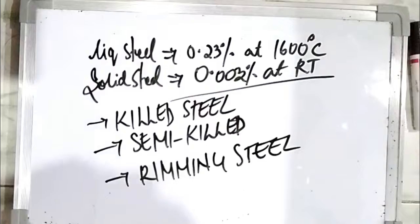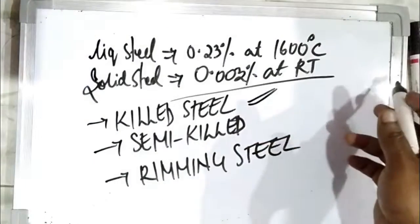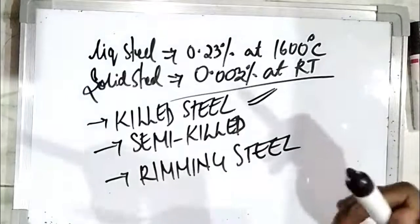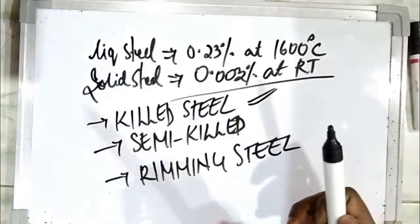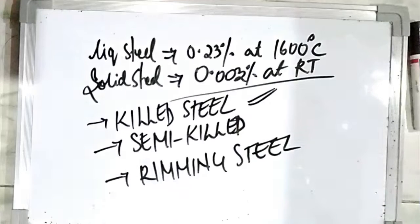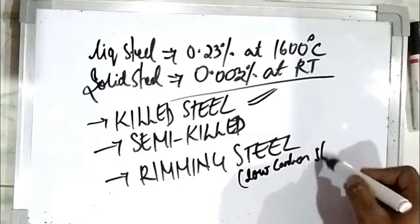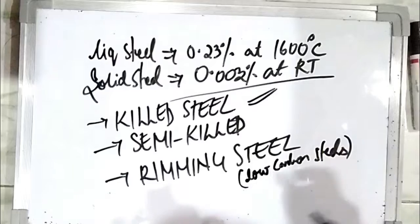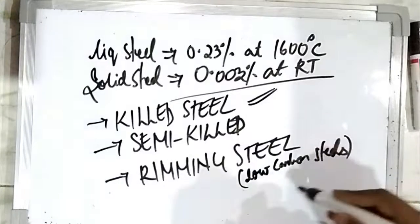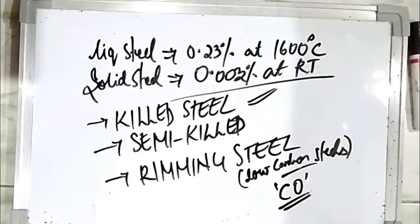Killed steel is where oxygen is completely removed — whatever oxygen is present in the steel is completely removed. In semi-killed steels, these are incompletely deoxidized steels — they contain some amount of oxygen after deoxidation. Rimming steels are non-deoxidized or very partially deoxidized steels. These are generally low carbon steels where the oxygen present reacts with carbon to form CO, which evolves out during solidification.